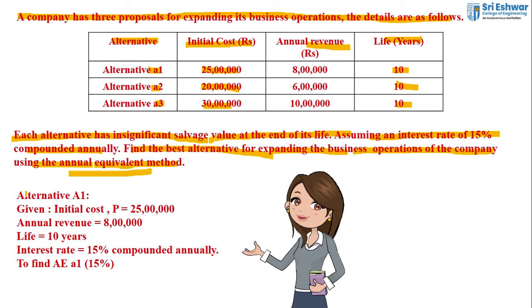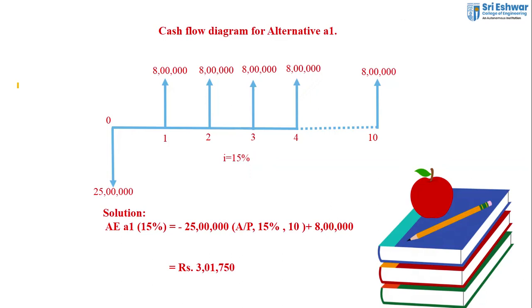First, we solve for Alternative A1. Given: initial cost P is 25 lakh, annual revenue is 8 lakh, life is 10 years, interest rate is 15% compounded annually. We need to find the Annual Equivalent (AE) for 15%. We draw the cash flow diagram for 10 years. Since annual revenue is mentioned, this is a revenue-dominated cash flow diagram.